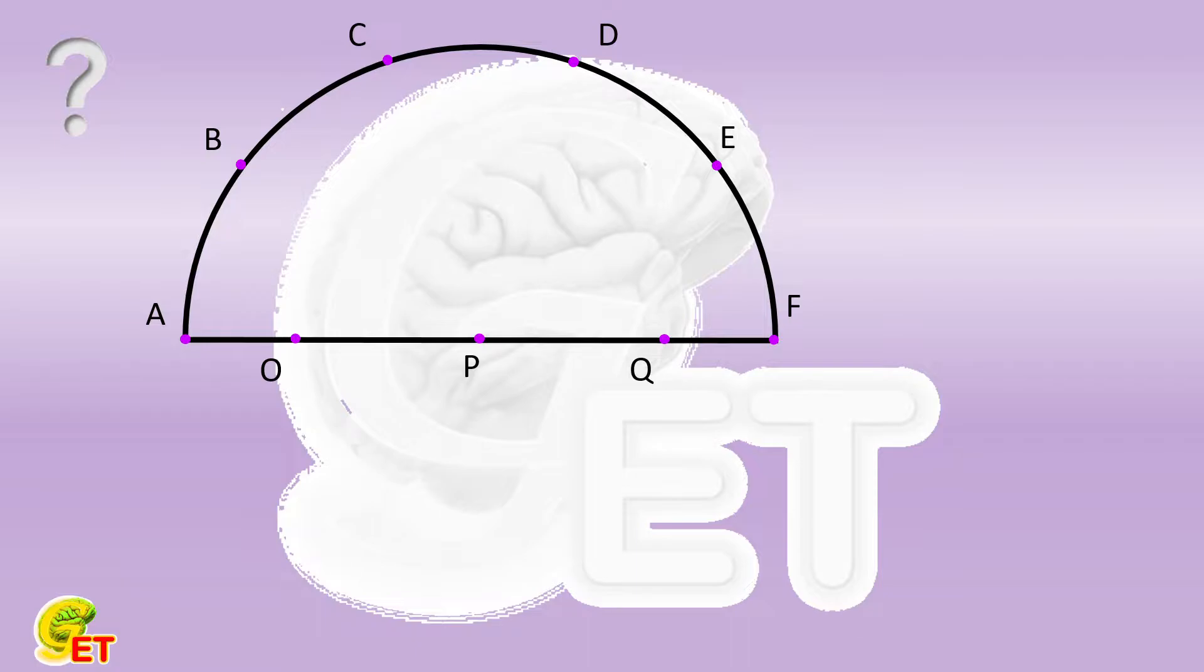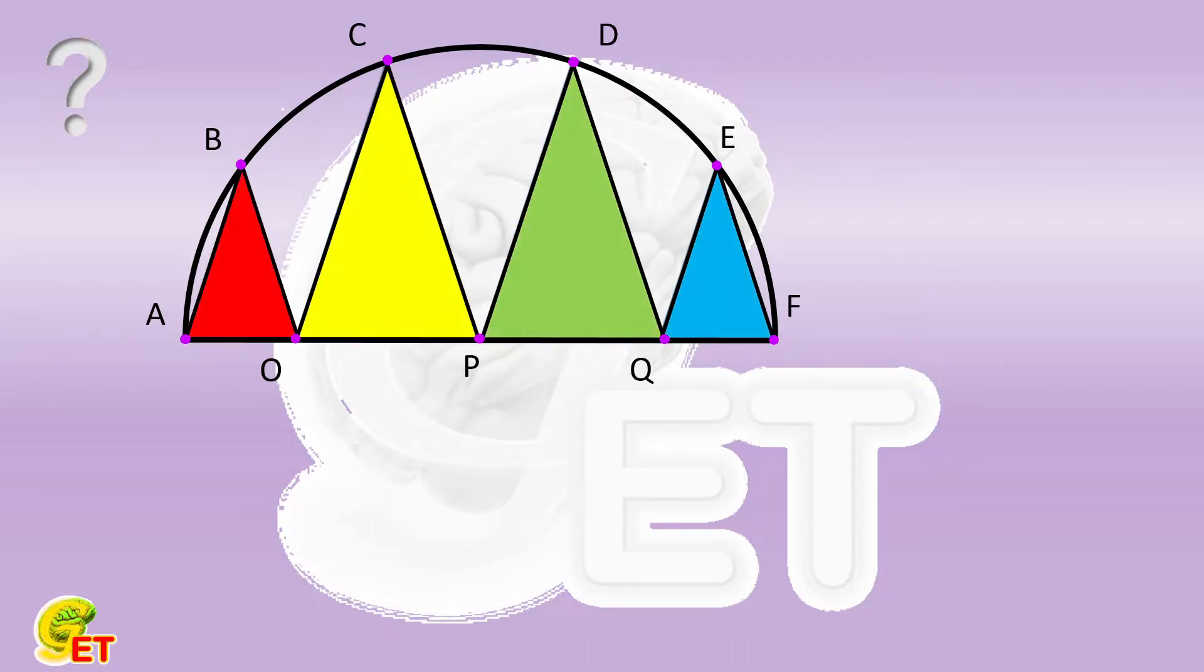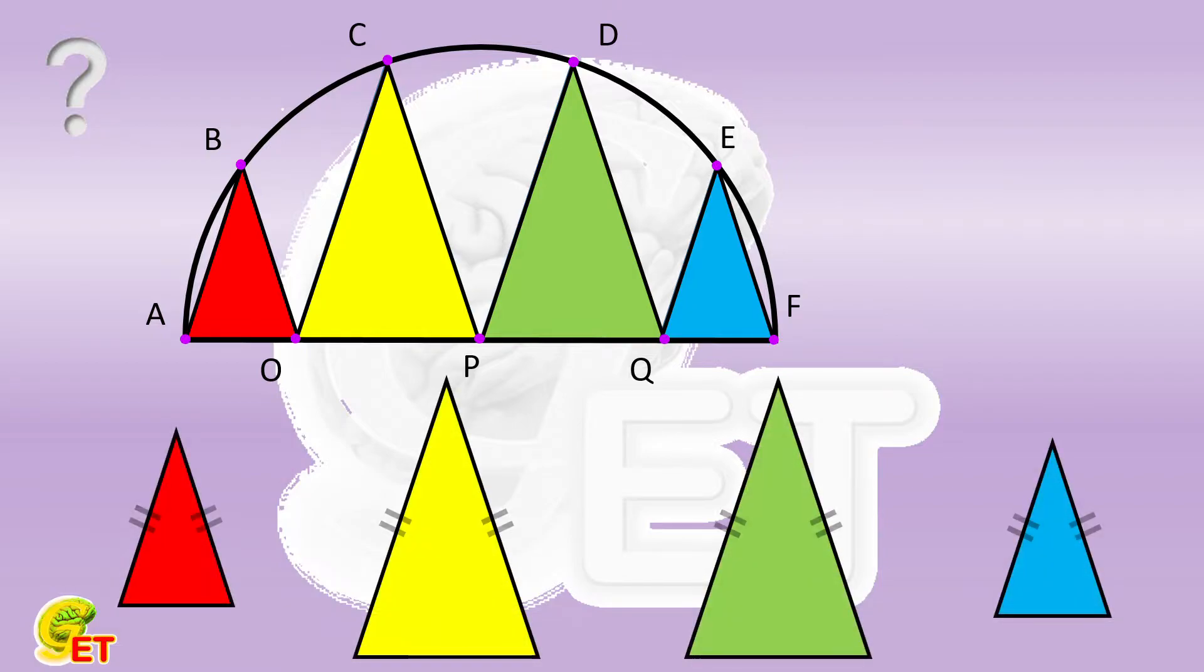We construct four triangles by connecting these points. It is known that these four triangles are all isosceles triangles, and they are all similar to each other. Then, how big are their vertex angles? Why not give a try, and we will come back soon.